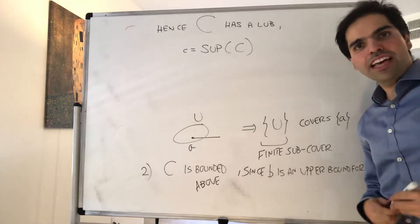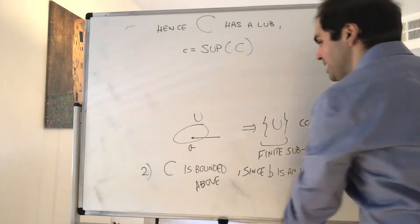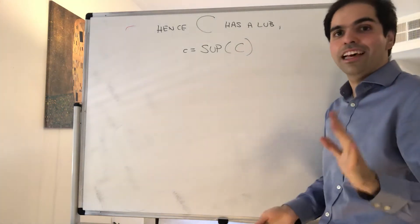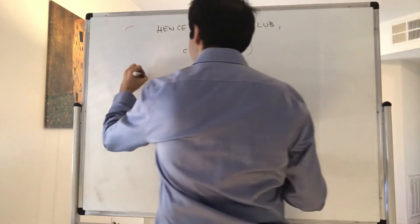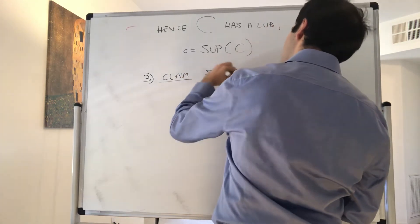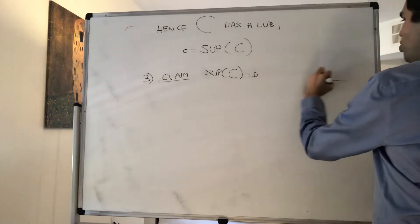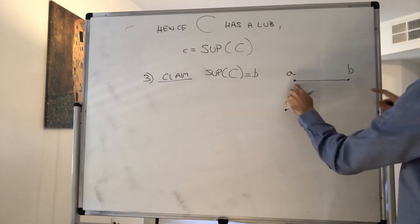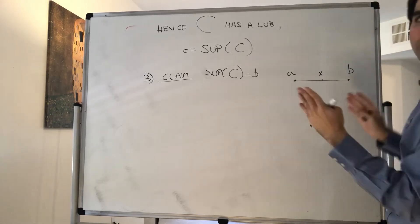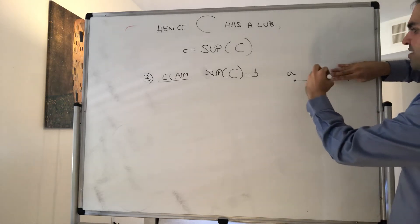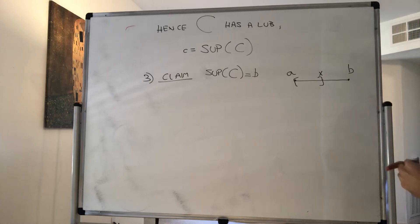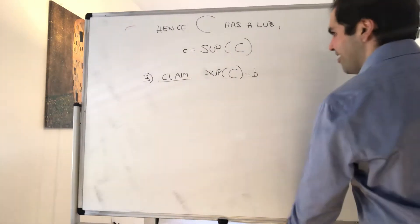Our next step is to show that the supremum must equal b. Note: this does not yet show that b is in the set, because the supremum doesn't always have to be in your set. So claim: the supremum of C is b. Intuitively this makes sense — if we want to show [a, b] has a finite subcover, then x has to reach b. If the supremum is not b, there's some [a, x] that's covered but nothing beyond, so [a, b] would not be finitely subcovered.